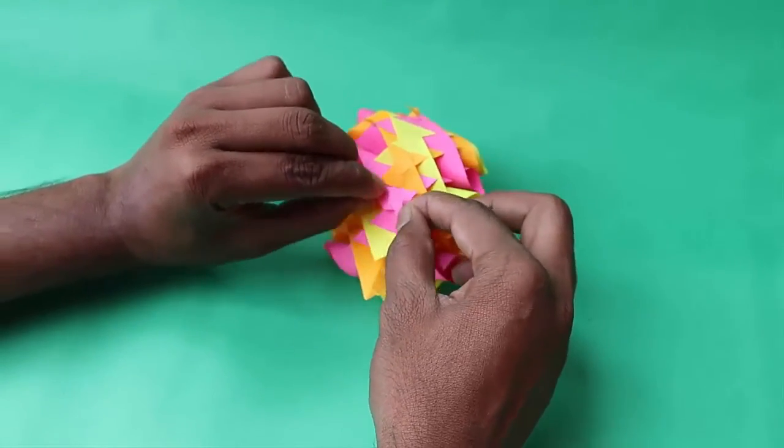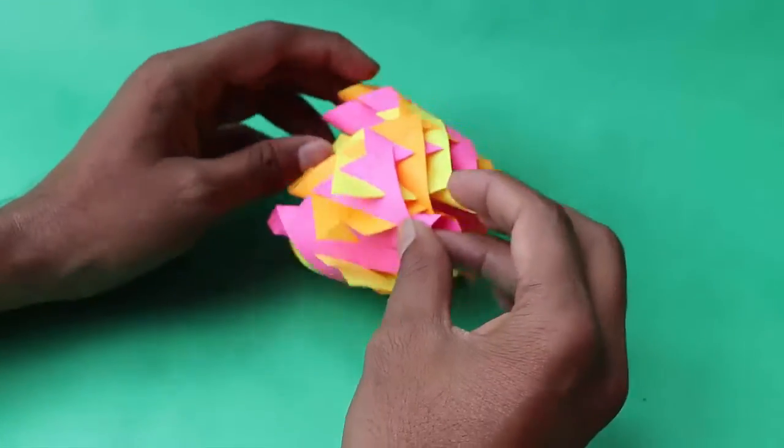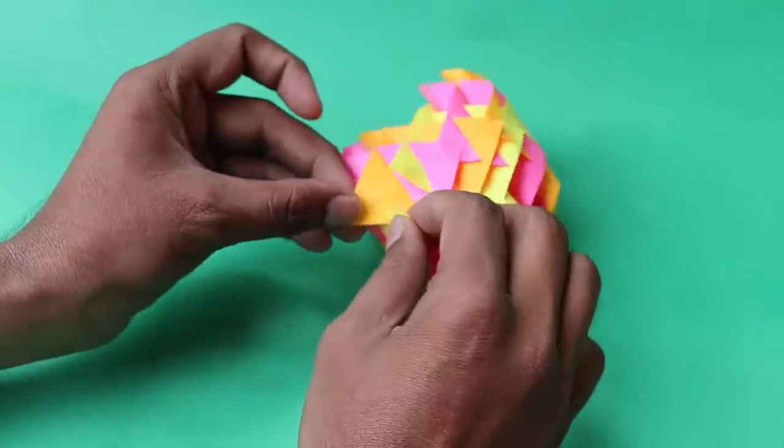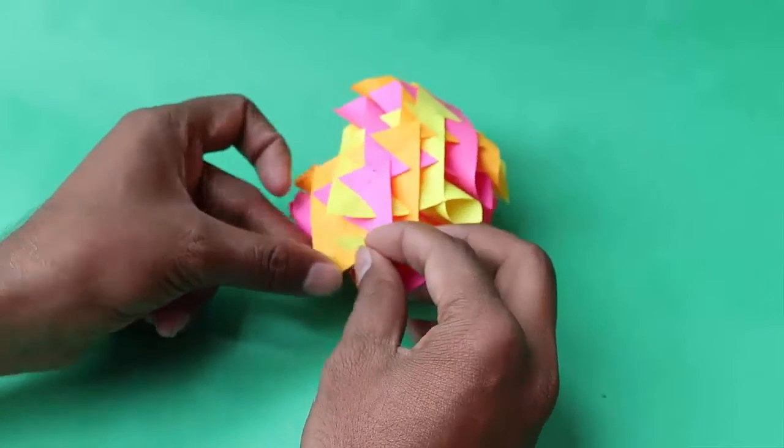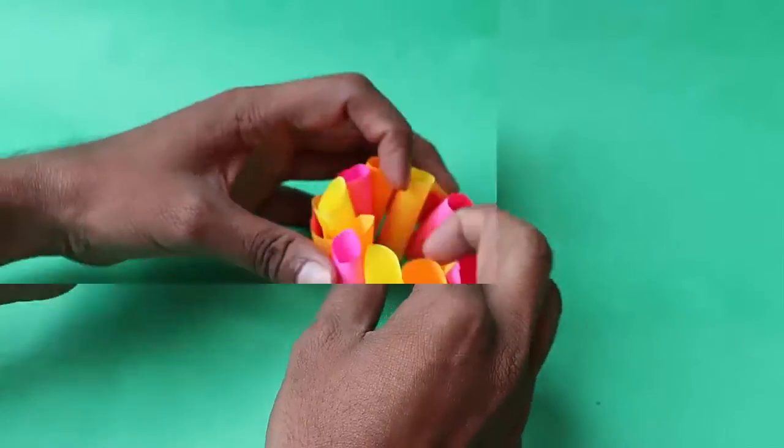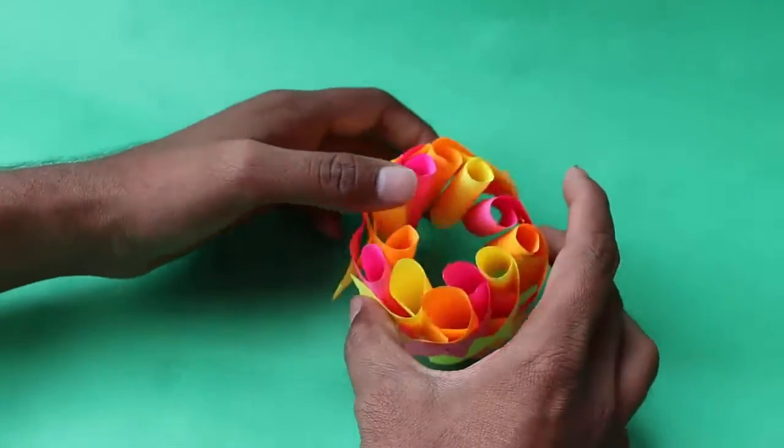Ensure that all the tube ends are inside. Finally, interlock all the slits to impart stability and strength to your model.